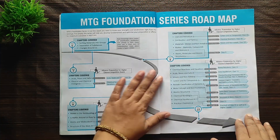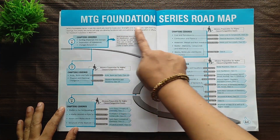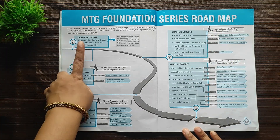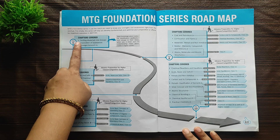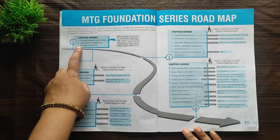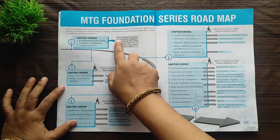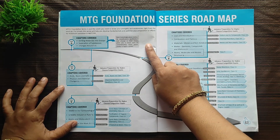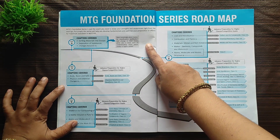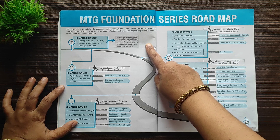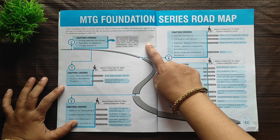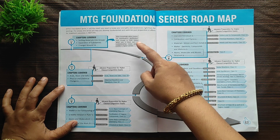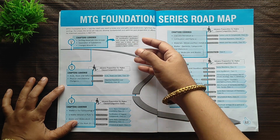Now let's get into the roadmap for Chemistry. Class 6 chapters covered are: sorting materials into groups, separation of substances, and changes around you. They explain that this basic knowledge about matter, its classification, purification, and changes into their states gives you a head start in understanding more about matter in higher classes. This gray box explains how this chapter will be the basis for your higher classes.